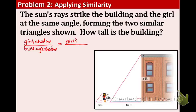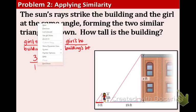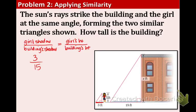And then on the top of the other side of the proportion we're going to have the girl's height, and building's height on bottom. So let's fill in our givens. The girl's shadow is 3 feet, right here. The building's shadow is 15, right here.